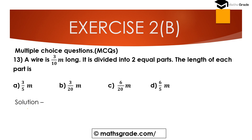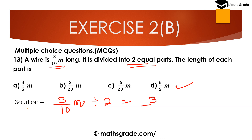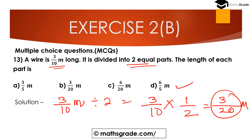Question number 13: A wire is 3/10 meter long and it is divided into 2 equal parts. The options for the length of each part are 3/5 meter, 3/20 meter, 6/20 meter, and 6/5 meter. To solve, we divide 3/10 by 2, which means multiplying 3/10 with the reciprocal of 2, that is 1/2. So 3 × 1 = 3 and 10 × 2 = 20, giving us 3/20 meter. Option B, 3/20 meter, is the correct answer.